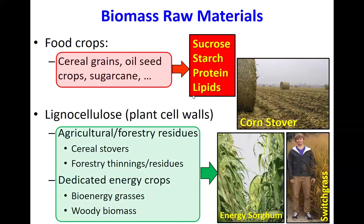There are different types of biomass we might consider. Food crops include cereal grains, oil seed crops, and sugarcane, using sucrose, starch, protein, or lipids. What we're primarily interested in is lignocellulose — everything except typically the seeds or storage tissues. We use the cell walls of the plant. Examples include corn stover, agricultural or forestry residues, and dedicated energy crops like bioenergy grasses — that's a photo of an undergraduate standing next to decorative switchgrass on the Michigan State campus.